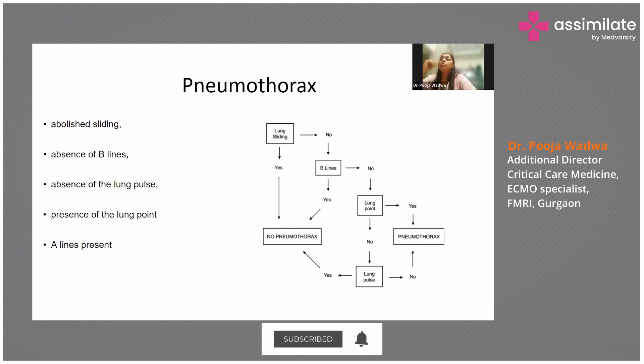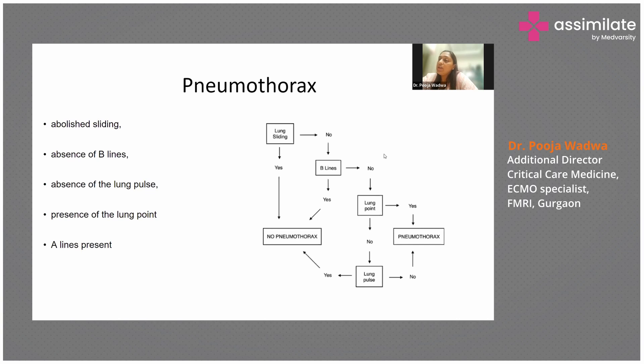For the pneumothorax detection algorithm: when you do lung ultrasound, check whether lung sliding is present or not. If sliding is present, there is no pneumothorax. If not, look for B-lines — if B-lines are present, there is no pneumothorax. If B-lines cannot be appreciated, look for the lung point. If the lung point is absent, look for lung pulse (transmitted heart rate) — if present, no pneumothorax. If lung point is present, there is pneumothorax. Even if the lung point is absent but lung pulse is also absent, pneumothorax is present and E-lines will be seen.